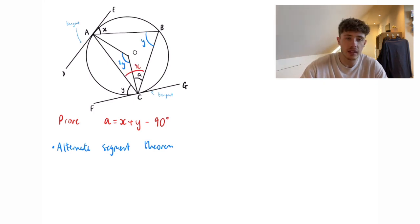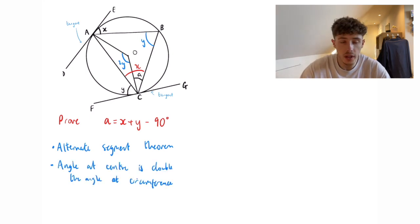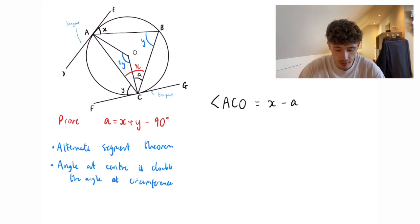Now it's going to get a bit messy within there so I'm just going to start writing them out here. Next, we know that angle ACO is going to equal x minus a. So the little section in there is going to be x minus a. Now if you look at that triangle that it forms, so AOC,